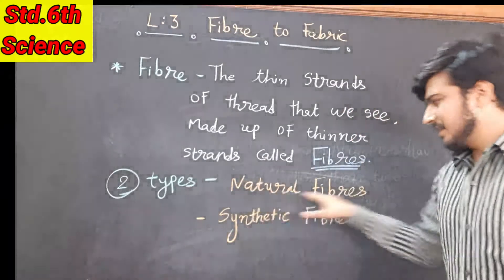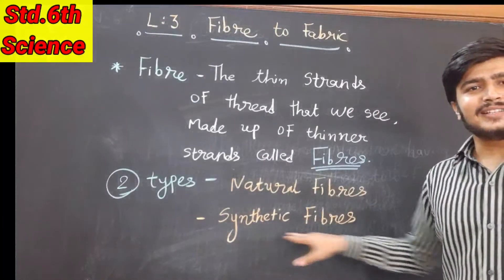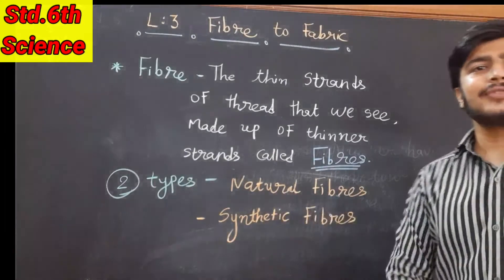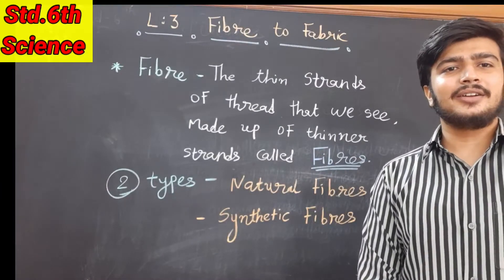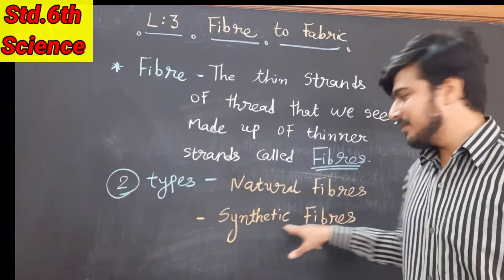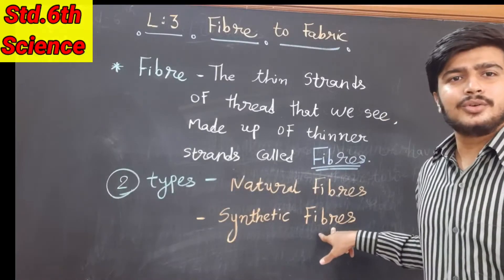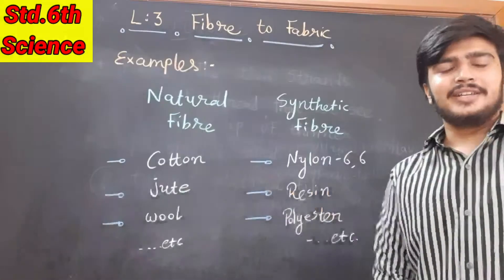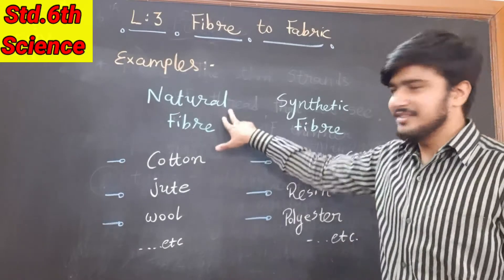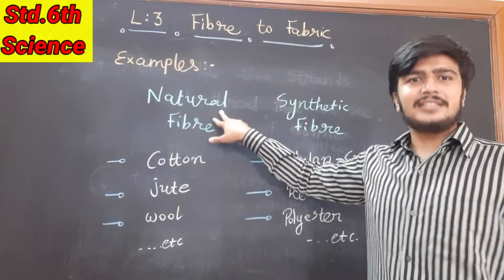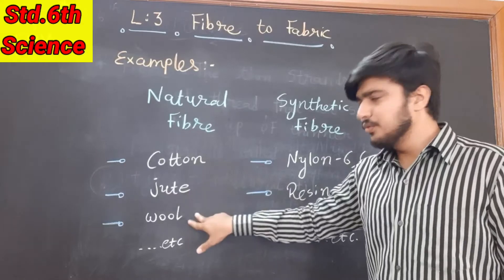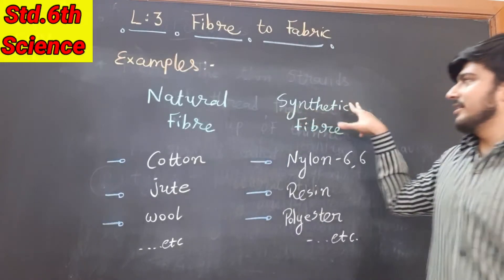There are two types of fiber: natural fibers and synthetic fibers. Fibers which we can gain from animals and plants are called natural fibers. Synthetic fibers are those which are mainly man-made. Examples of natural fibers include cotton, jute, wool, etc.